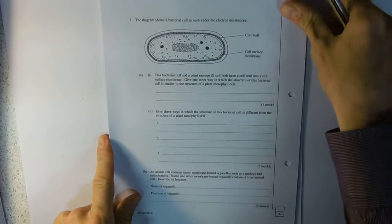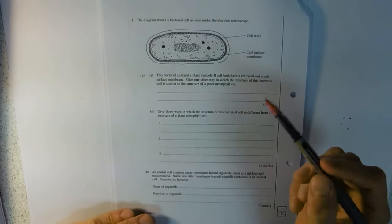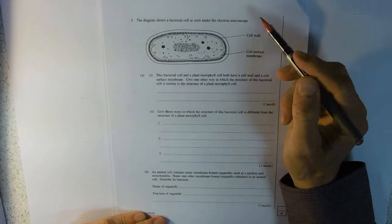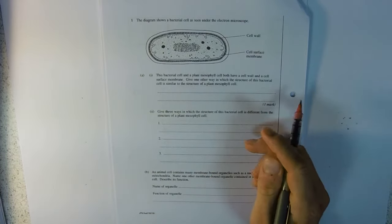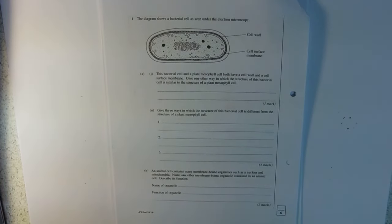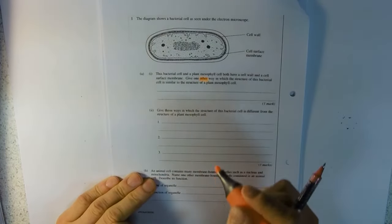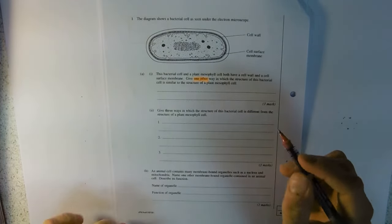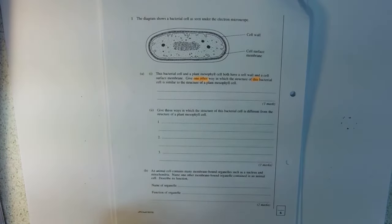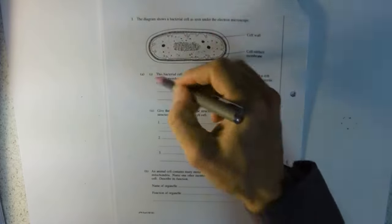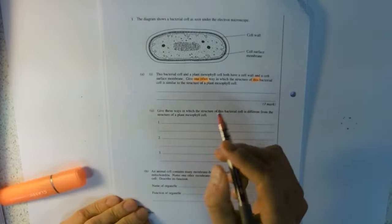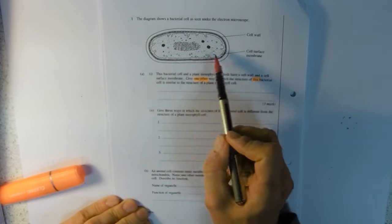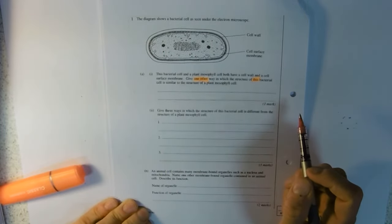This bacterial cell and a plant mesophil cell both have a cell wall and a cell surface membrane. Give one other way they're similar. Quite a few people have not given another, or they've given more than one, so that would be read the question. And this bacterial cell hasn't got a flagellum, so we're looking at something else that's in plant cells that would also be here.